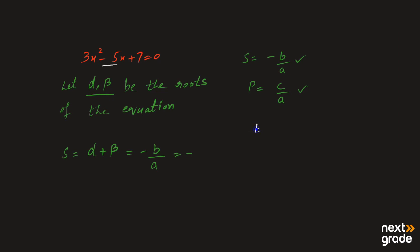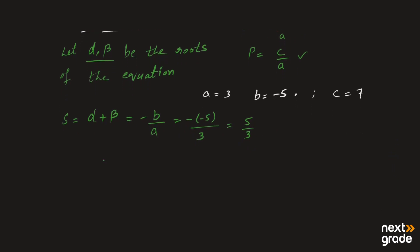تو b کی value equal ہے minus 5 کے، اور a کی value x² کے ساتھ والا coefficient ہوگا، that is 3۔ اور c کی value، that is the constant term, is 7. تو یہاں پہ ہم put کرتے ہیں: b کی value minus 5 ہے تو bracket میں minus 5 لکھیں گے۔ چونکہ پیچھے minus ہے over a جو کہ 3 ہے، تو minus minus کو plus کرے گا — 5/3 آگیا۔ So alpha plus beta = 5/3, which is the sum of roots.